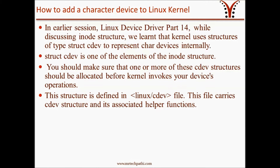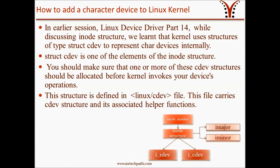How to add a character device to the Linux kernel: in earlier Linux Device Driver parts, we discussed ways to register a character device and how to allocate a major and minor number to it. We also covered file operations and important data structures useful for character device programming. Now it's time to add your character device to your kernel. The kernel uses structures of type struct cdev to represent characters internally. Struct cdev is one of the elements of the inode structure. If the kernel has to invoke your device, it has to register a structure of this type. This structure is defined in the cdev.h Linux header file.